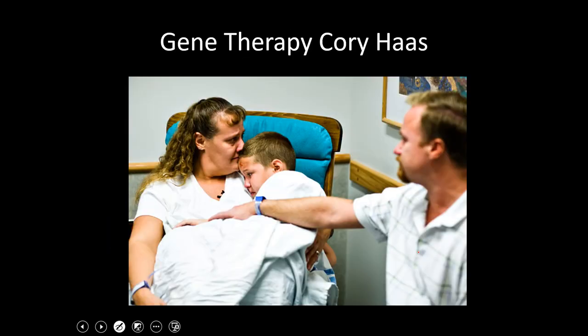One really interesting concept in genetics right now is gene therapy. There are people with genetic conditions we didn't previously have cures for, and gene therapy at its best could cure a person of their genetic condition. Corey Haas has a condition where his retina atrophies — he was legally blind from a very early age and progressed to fully blind. In the gene therapy trial, they take a virus, remove its genetic material, and insert the corrected gene — in his case, a good copy of the mutant gene he was born with. Then they inject the virus directly into his eyeball.